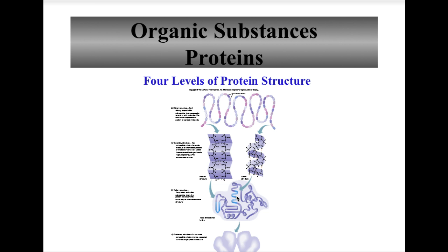Protein denaturation occurs with extreme pH values, so we need to consider where in the body an enzyme or protein is located and its optimal pH range — blood pH is very different from the pH of stomach gastric juices. Temperature values also matter; we need to consider at what temperatures enzymes work best. Harsh chemicals and high salt concentrations can also disrupt the bonding patterns of protein structure, affecting osmotic relationships within cells.